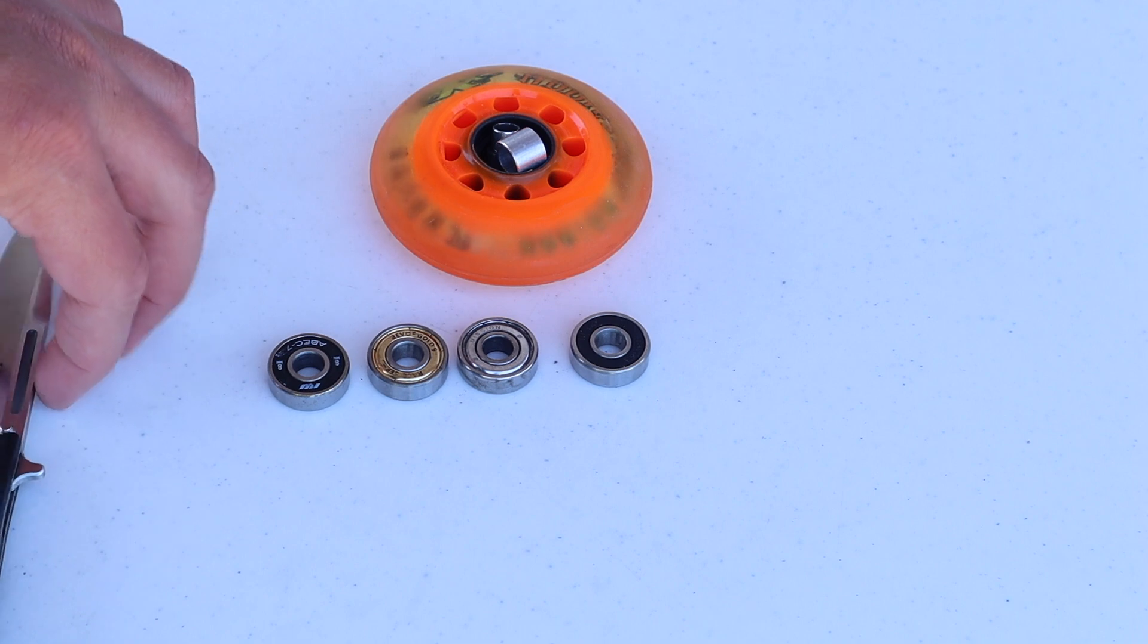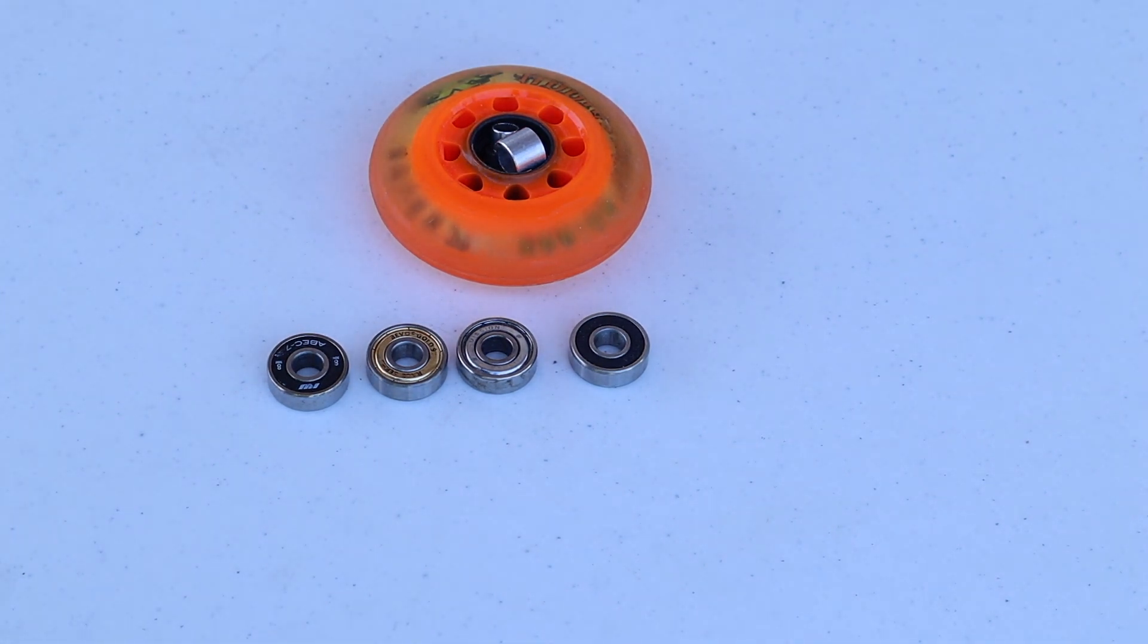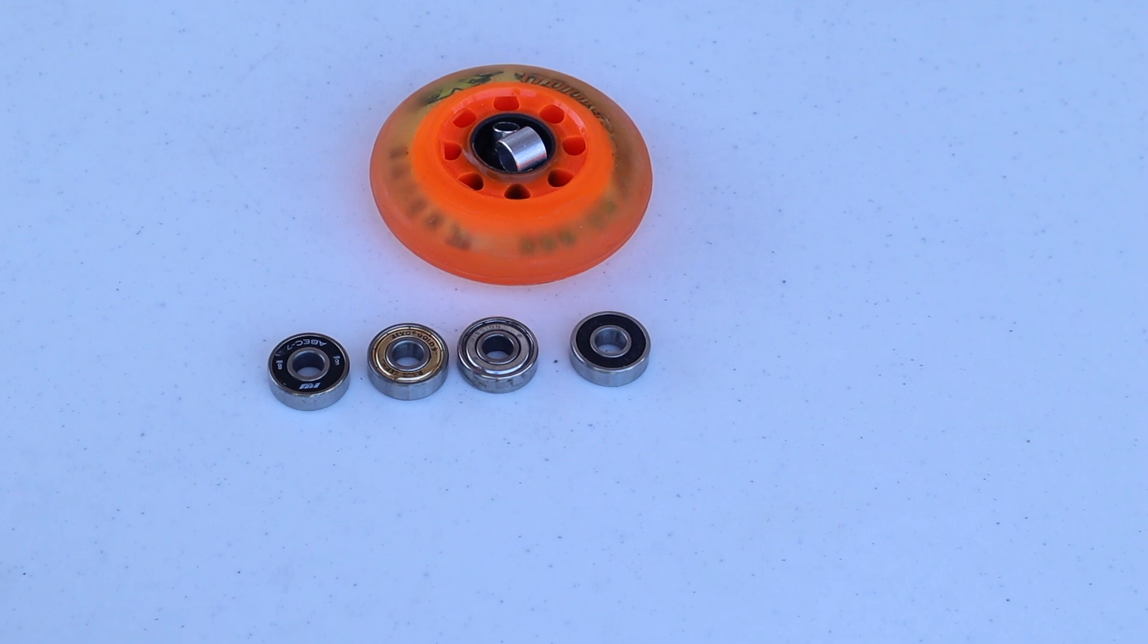You can clean them with gas, that's usually what I do for all my outdoor bearings when I clean them, and then I just lube them up with some Bone speed cream. You can use WD-42, but that does kind of bind up after a while.